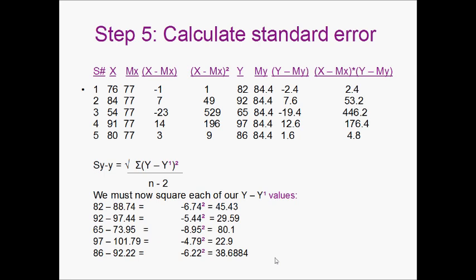Then from here, we have to square each of our Y minus Y prime values. So 6.74 squared is 45.43, 5.44 squared is 29.59, 8.95 squared is 80.1, and 4.79 squared is 22.9, and 6.22 squared is 38.68.